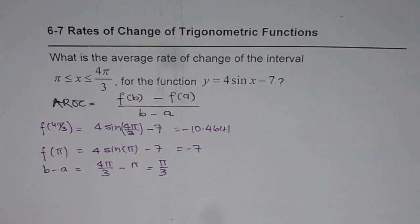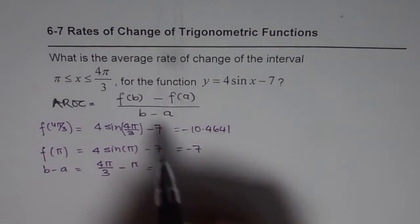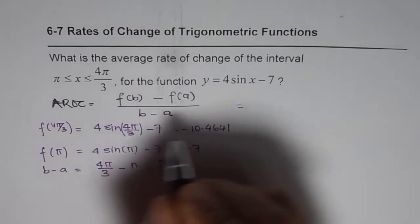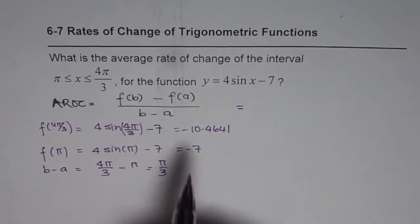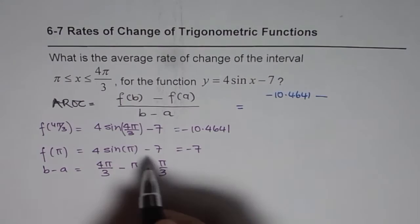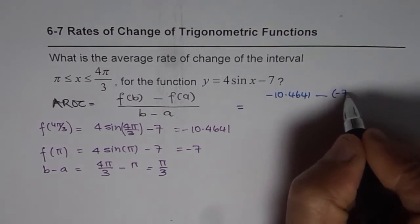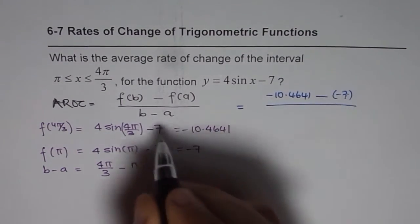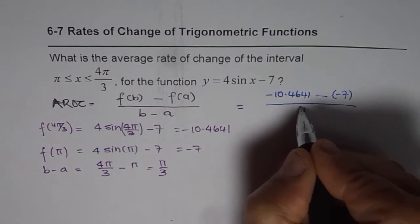So we have all the values and now we can substitute these values in the given equation, this formula, and find the average rate of change. So f(b) is -10.4641 minus of -7 divided by b minus a which is π/3.